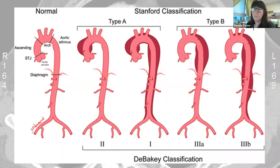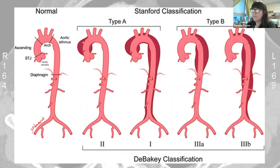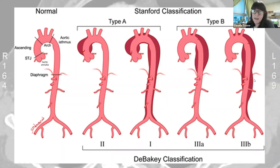The DeBakey classification is a little different — it has more classifications and groups anatomically. Type 1 originates in the ascending aorta and can extend to about the aortic arch; it's typically seen in patients under 65 and carries the highest mortality rate. Type 2 is confined to just the ascending aorta and is classically seen in elderly patients with a long history of hypertension. Type 3 originates distal to the subclavian in the descending aorta, further categorized into 3A, which stays within the thoracic cavity, and 3B, which can extend into the abdominal cavity.